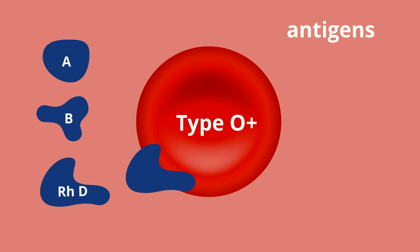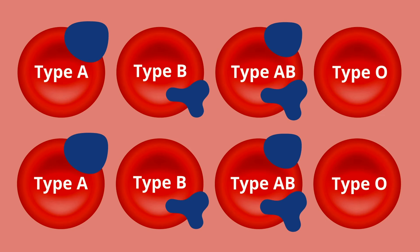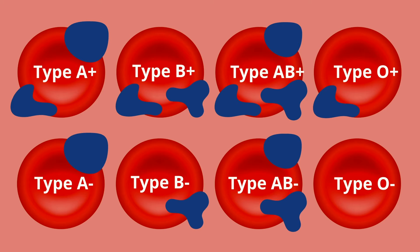If the RHD antigen is there, we say the person has a positive blood type. And if the RHD antigen is not there, the person has a negative type. That is how there are eight major blood types — A, B, AB, and O — and positive or negative for each of those, depending on whether RHD is present.